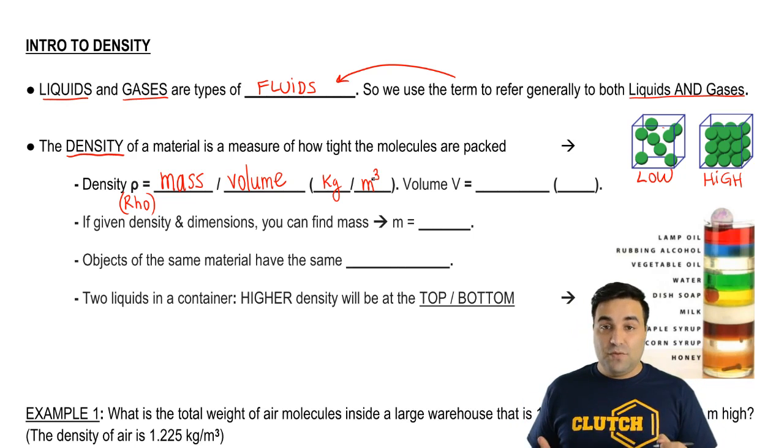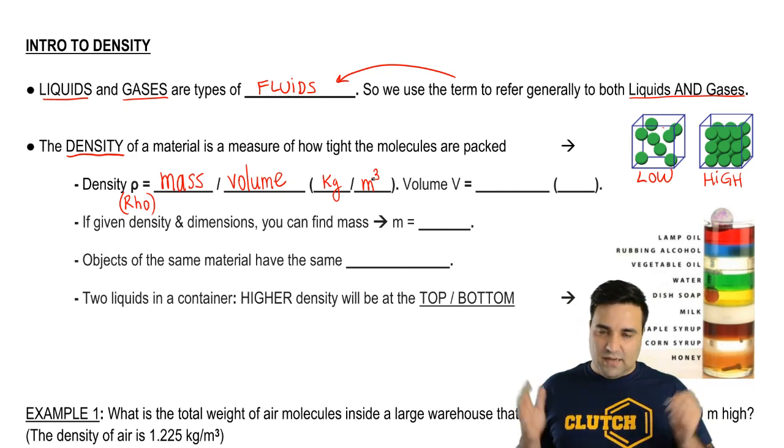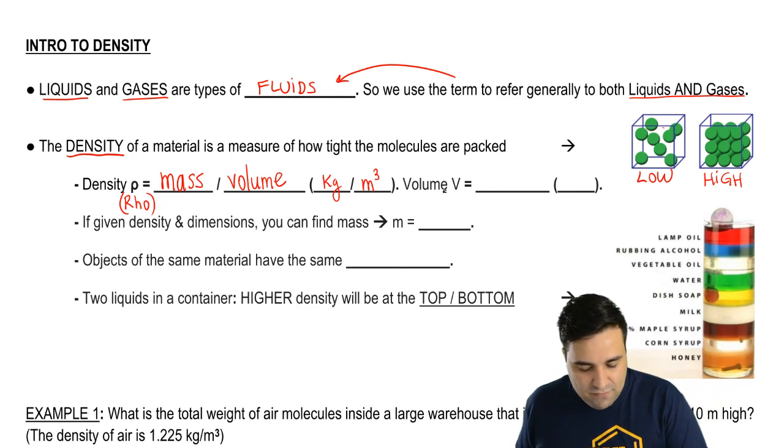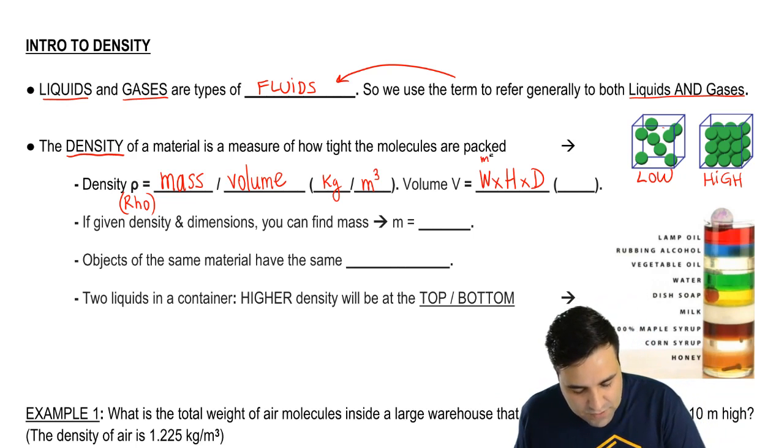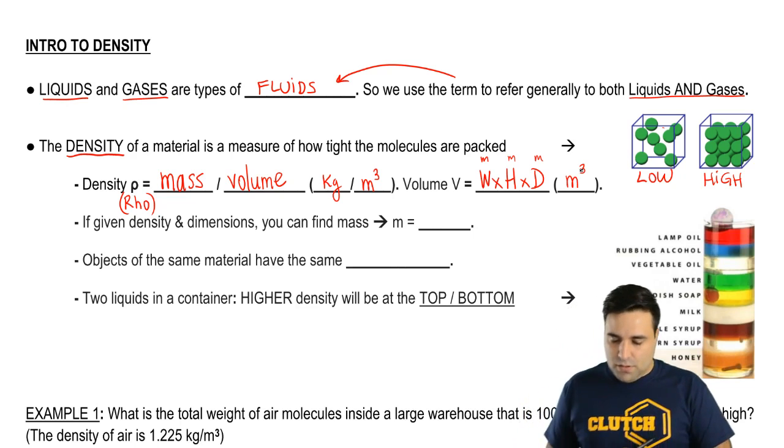Remember, if you have the three dimensions of an object, like a rectangle or something, then the volume of a rectangle would be the width of the rectangle times the height times the depth. And because each one of these guys is a meter, you got meter, meter, meter, you have cubic meter.